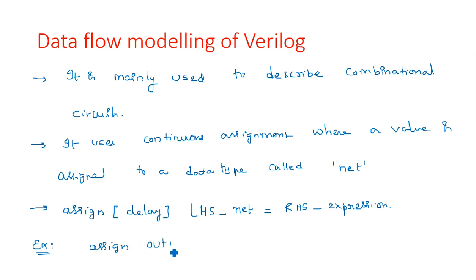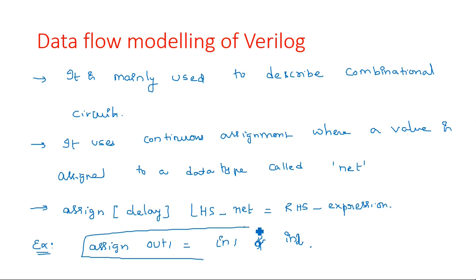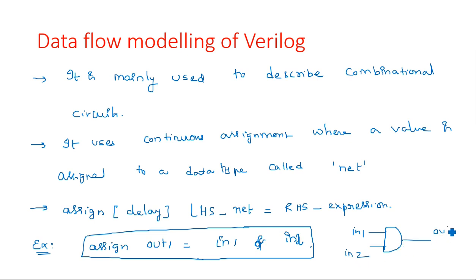For example: assign out1 equals in1 and in2. Here, the AND operation is written with the ampersand symbol. This assignment says that it performs an AND operation between the inputs in1 and in2 — meaning it is an AND gate with inputs in1 and in2, and output is out1. So we are assigning output1 as equal to input1 AND input2.